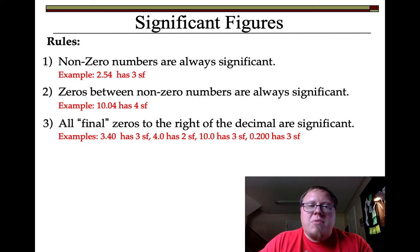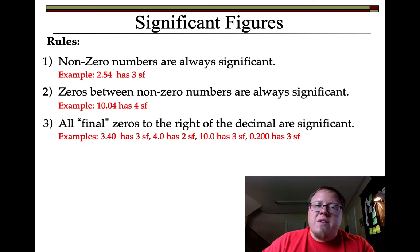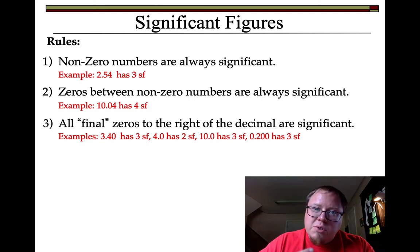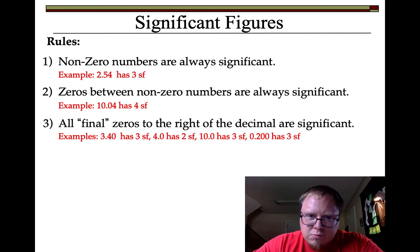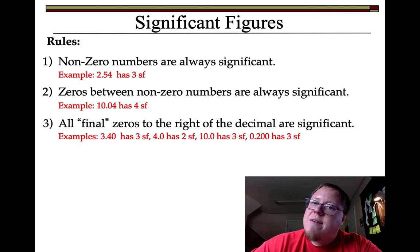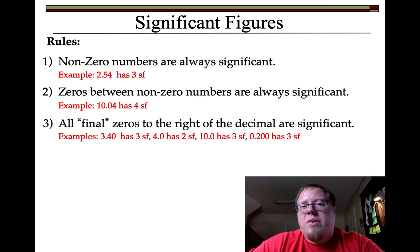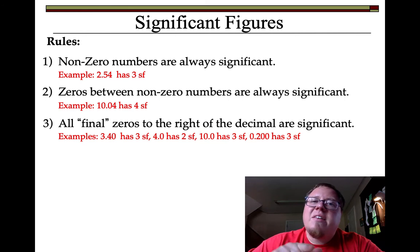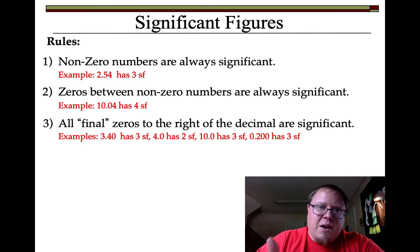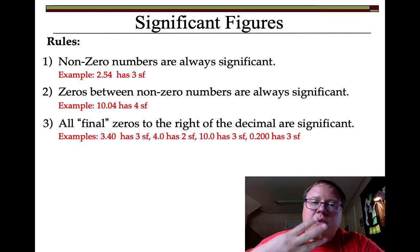4.0 — same thing. They had a 4 line and a 5 line, and were able to read the tenths place. They think it's right on the 4.0, so that has two significant figures. 10.0 — they probably had a 9, a 10, an 11, and they think it's right on 10. So they added that 0 there to be significant. It's the tens place, ones place, and they're estimating the tenths place — three significant figures.